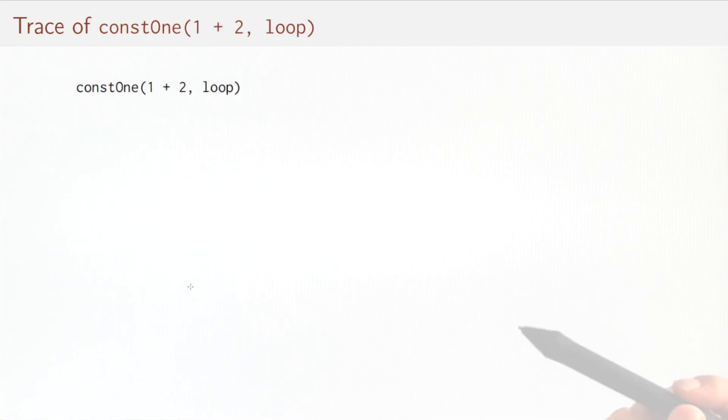So the first one, constOne one plus two loop, the first parameter is called by value, so we have to reduce that to three. So that will be three and the rest will be kept as it was before. The second parameter we do not need to reduce because it's a call-by-name parameter. So we are done with the argument list. We can apply the function and the function would just always reduce to one. So it would in fact ignore both of its parameters. That's the first expression.